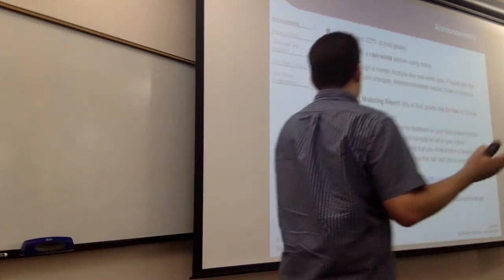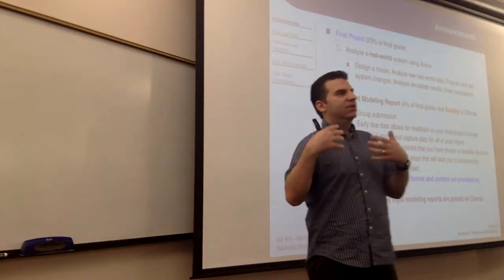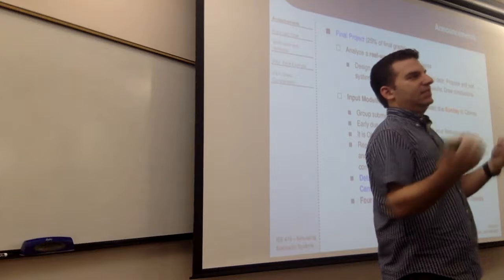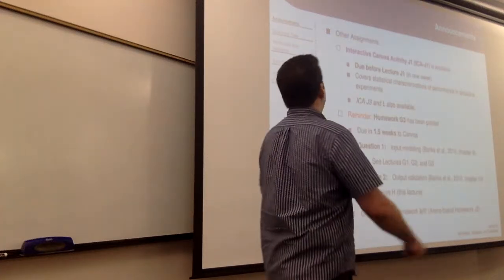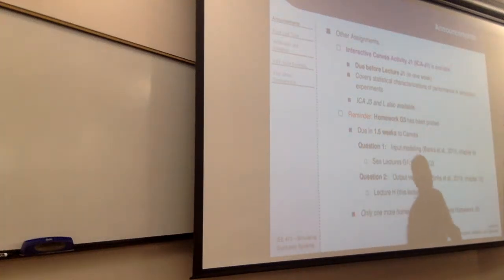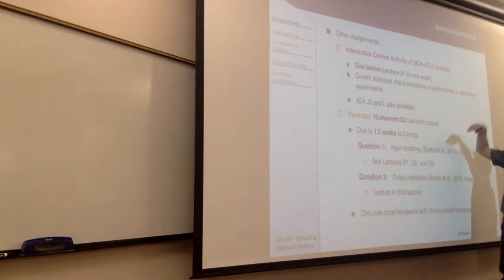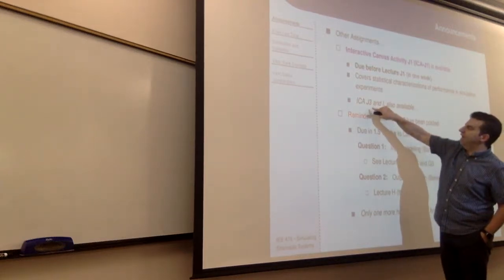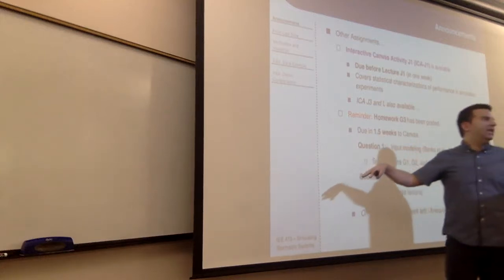If you want feedback sooner than office hours, send me a note or post a message saying we're thinking about doing system A or B — which do you think is better — and I can give you my opinion. That ICA-H originally due today was my bad that Canvas didn't release it, so that is now due in one week. ICA-J1 is also due in one week, and then there are two other novel ICAs, plus a final review ICA.